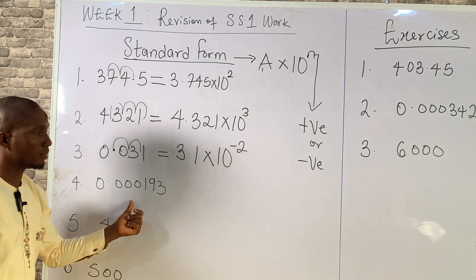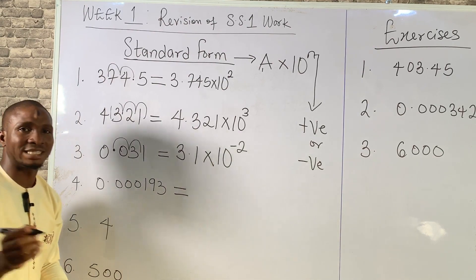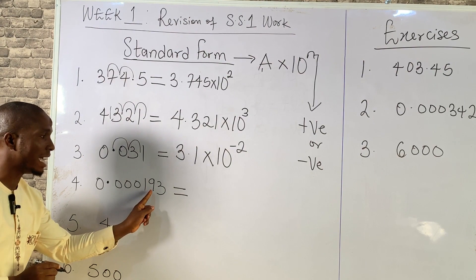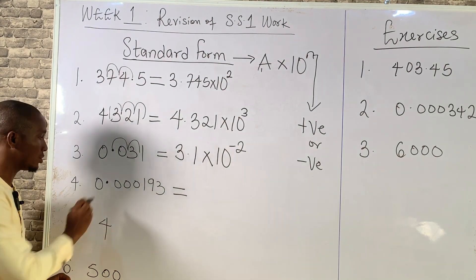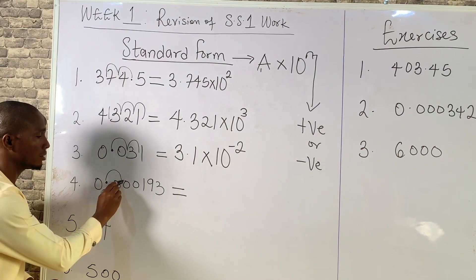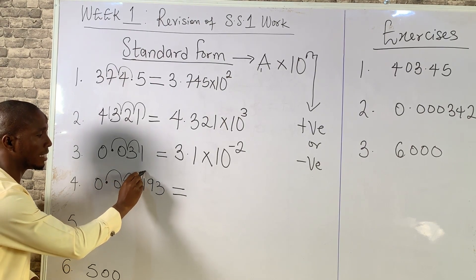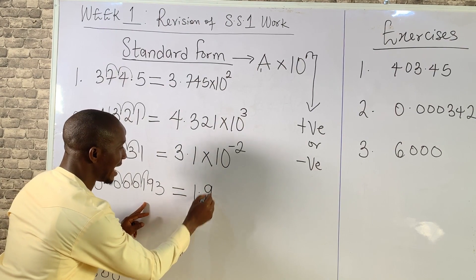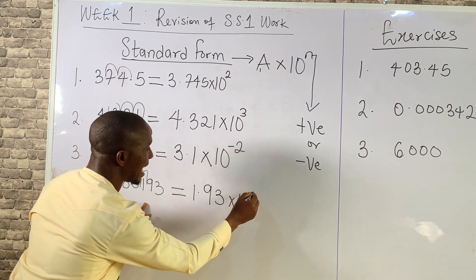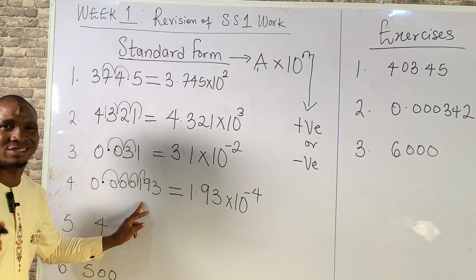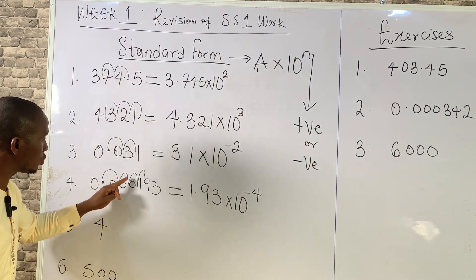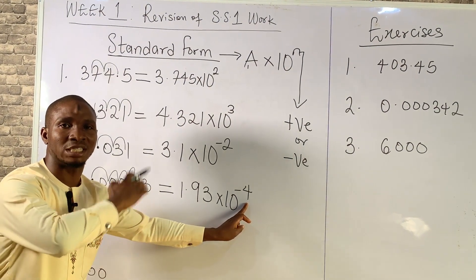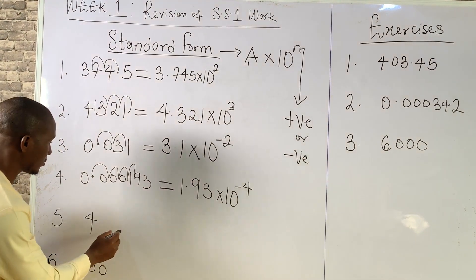Example 4: We look at the decimal point position. It must be between the first and second number. We count 4 places to the right, giving 1.93 times 10 raised to power minus 4. It's negative because we are still moving towards the right-hand side.